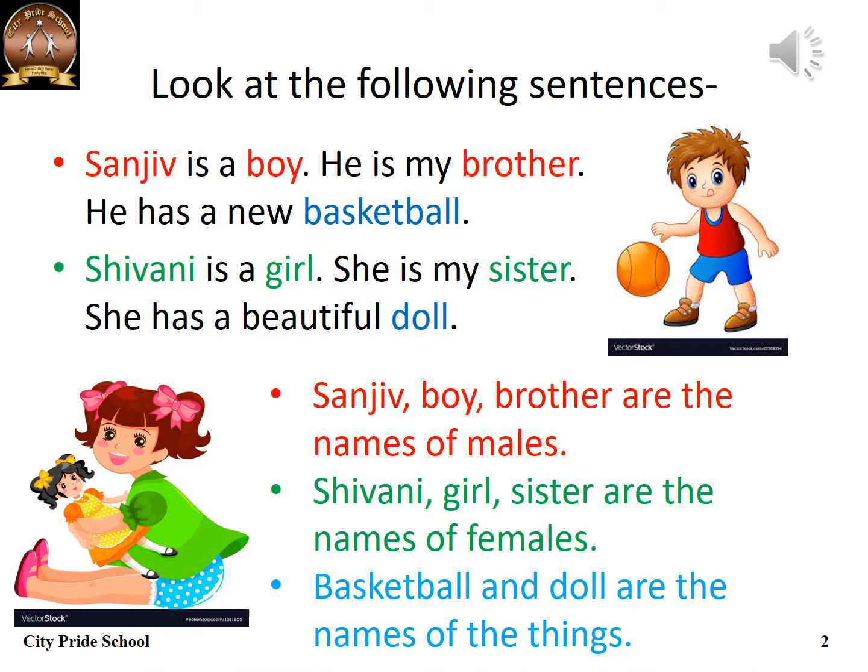Now let's learn more about nouns. Look at the following sentences. Sanjeev is a boy. He is my brother. He has a new basketball. Shivani is a girl. She is my sister. She has a beautiful doll. In these sentences, some words are highlighted with the same color. Sanjeev, boy, and brother are names for males. Shivani, girl, and sister are names of females. And basketball and doll are names of things.